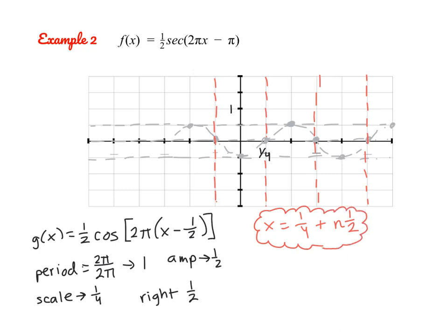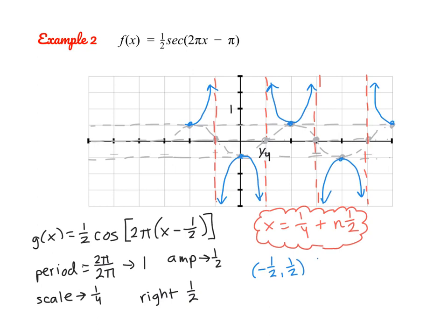We draw in our vertical asymptotes wherever our cosine function is 0, which we can describe as x equals ¼ plus n(½), reoccurring every ½ unit. Then we sketch in our parabolas with coordinates. Some exact coordinates from the graph are: (−½, ½), (0, −½), (½, ½), and (1, −½).